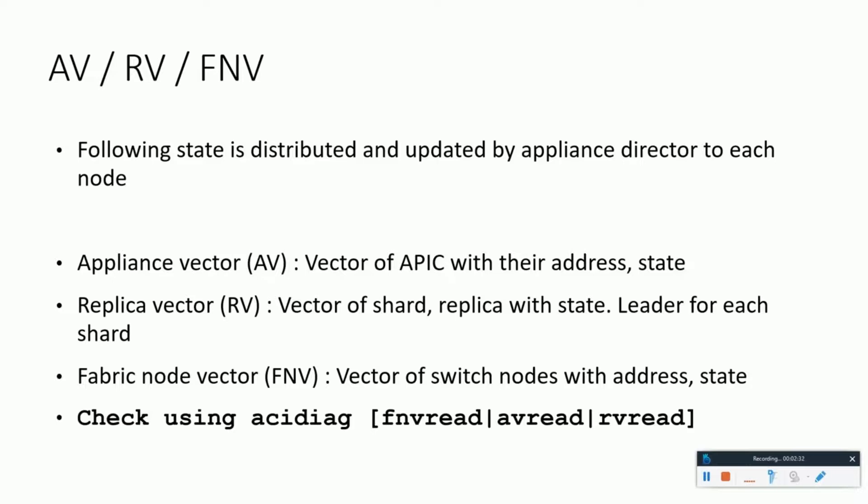The replication we just discussed occurs using different appliance director vectors. The first is the appliance vector, which shows the cluster node addresses and their state. The replica vector shows the sharding and replication states inside the cluster and also shows the leader for each shard. A shard basically means the chunk of data present at a particular controller. The fabric node vector helps with the address and state for the switch nodes.